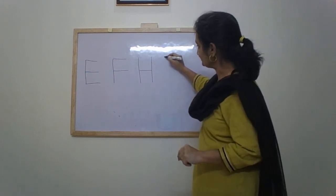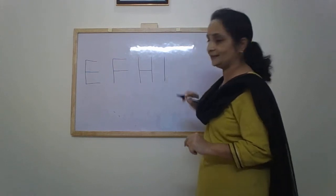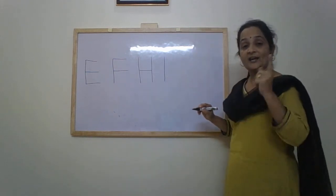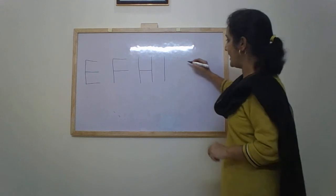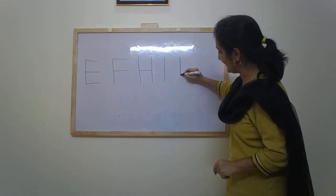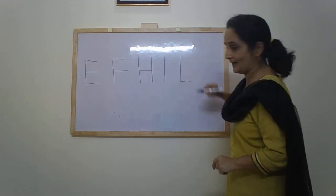Then I — a standing line letter, I. Then J, K, and L. For L: standing line, sleeping line — L.